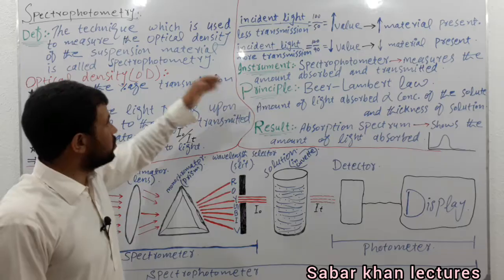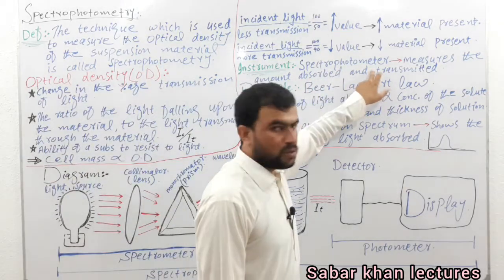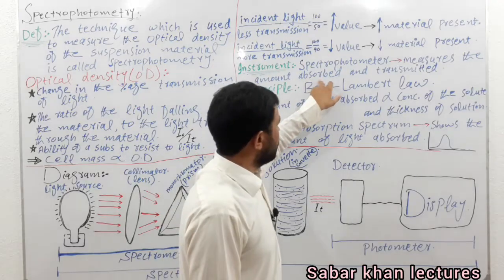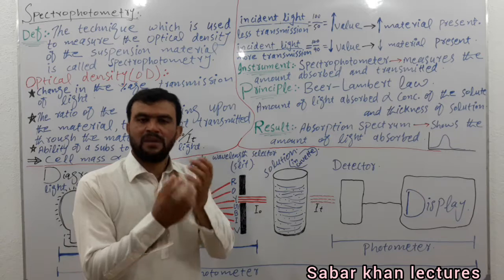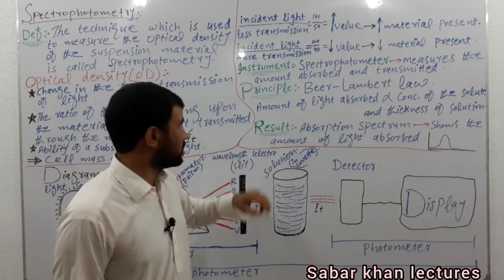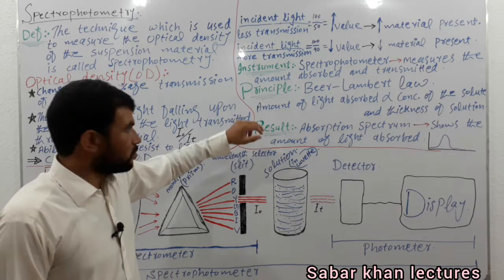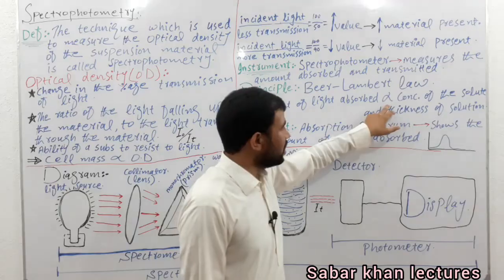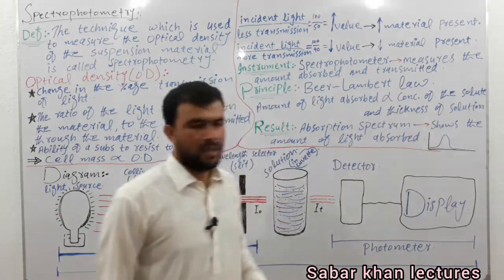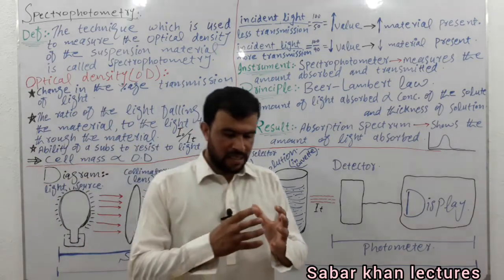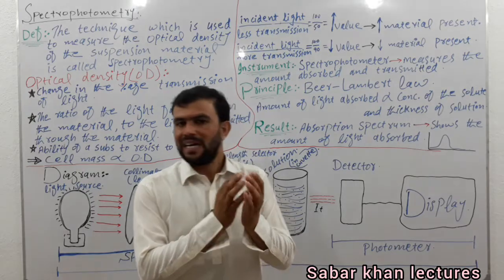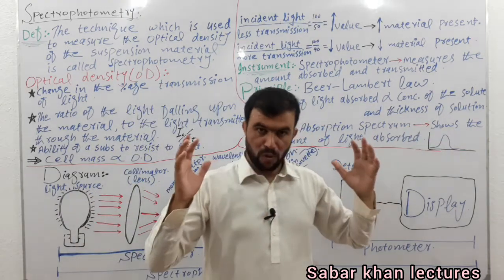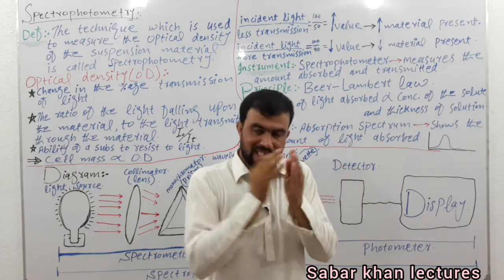Now we will come towards the instrument used in spectrophotometry: the spectrophotometer is used. It measures the amount of light absorbed and the amount of light transmitted. The principle used in spectrophotometry is Beer-Lambert's law, which states that the amount of light absorbed is directly proportional to the concentration of solute and the thickness of the solution. When solute concentration is more, more light will be absorbed; when less, less light will be absorbed. Similarly, when solution thickness is more, more light is absorbed; when less, less light is absorbed.